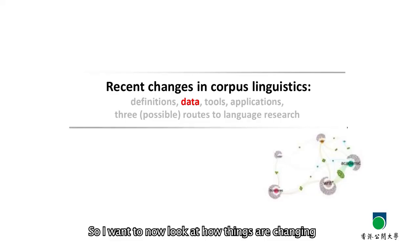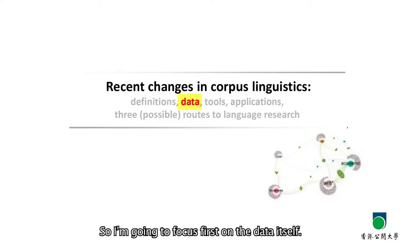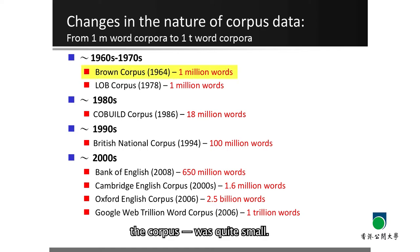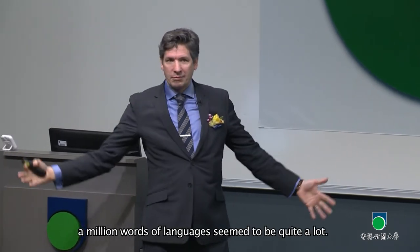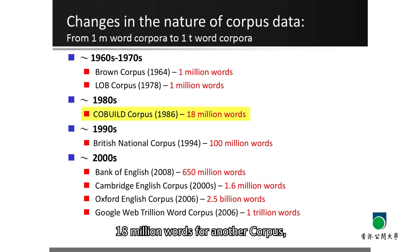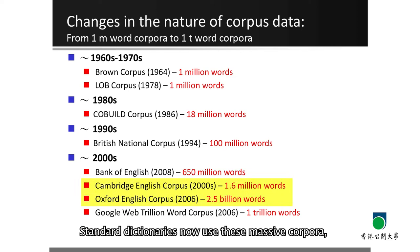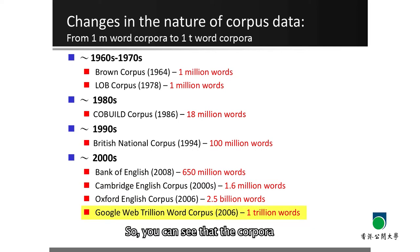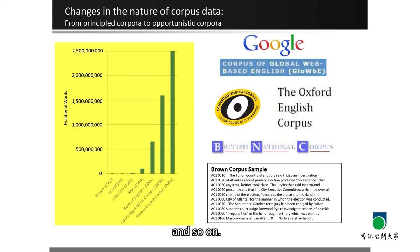I want to look at how things are changing in corpus linguistics and how that impacts us as researchers and teachers. Focusing first on data: traditionally in the 1960s, the corpus was quite small — one million words. In the 1980s, 80 million words for the COBUILD corpus for the dictionary. In the 1990s, the British National Corpus was 100 million words, and then the Bank of English at Birmingham hit 650 million. Standard dictionaries now use massive corpora — billion words — and Google's trillion-word corpus. So you can see that corpora are getting massively, massively large. We can plot this — that's Brown, and that's Oxford — and you can see a very different size of corpus, which means the analysis is going to be different too.